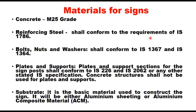The materials for signs and their fabrication should meet these guidelines. Concrete should be of M25 grade. Reinforcement steel shall conform to IS 1786. Bolts, nuts and washers shall conform to IS 1367 and IS 1364. Plates and support sections for the sign post shall conform to IS 226 and IS 2062 or any other stated IS specification. Concrete structure shall not be used for plates and supports.